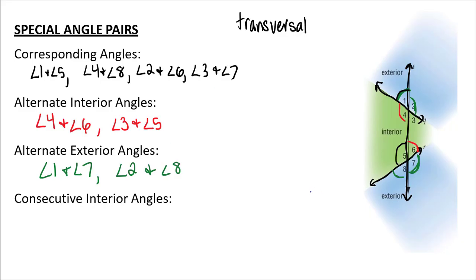And then you have your consecutive interior angles. I used to teach out of a different book and that book would call these same side interior angles. So some teachers will call them that. Same side of the transversal in the interior. That'd be angles four and angle five and angle three and angle six.